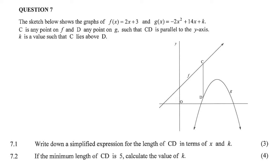The sketch below shows the graphs of f of x and g of x. So we have a straight line and we have a parabola. C is any point such that CD is parallel to the y-axis. k is a value such that C lies above D.